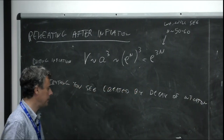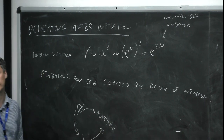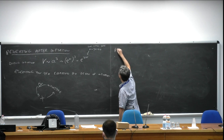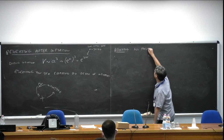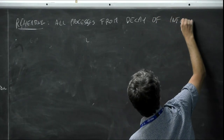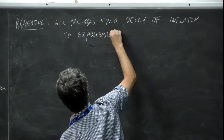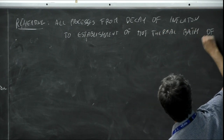Everything you see — and also everything you don't see — was created by the decay of the inflaton. Maybe not directly, maybe the inflaton decays into matter (meaning Standard Model fields) or something else that then decays to matter. But essentially everything we see in this scenario needs to start from the decay of the inflaton field. Reheating is a broad term — it covers all processes from the decay of the inflaton to the establishment of the hot thermal bath of big bang cosmology.